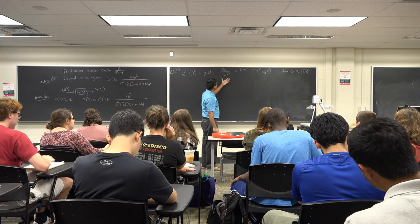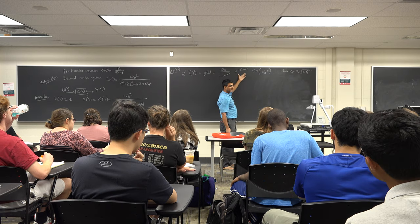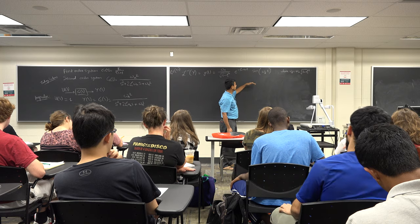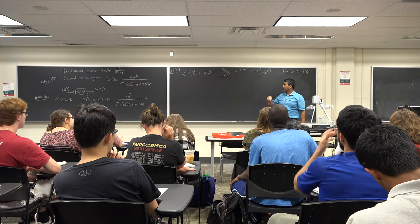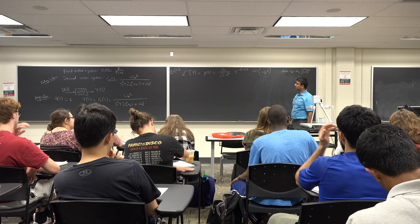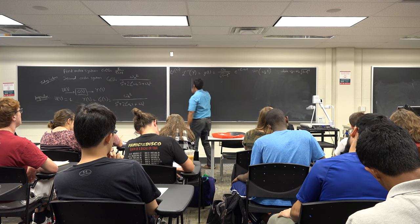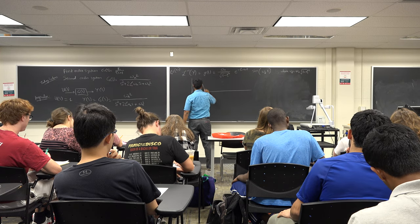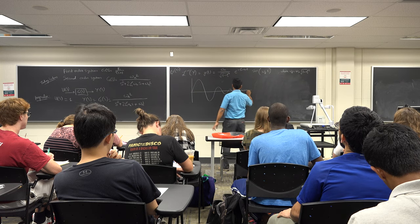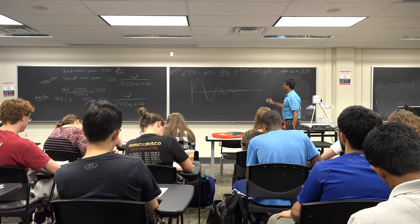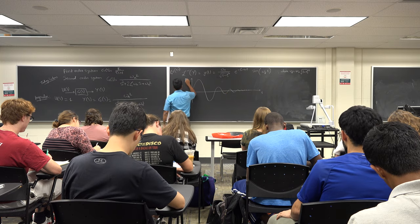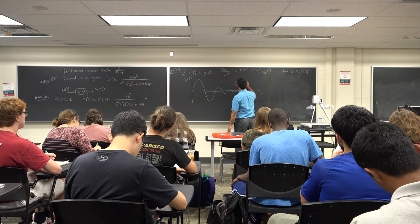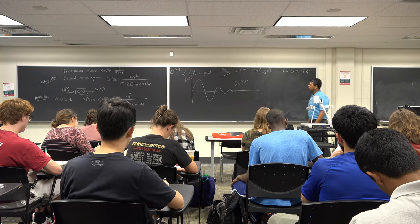What does this expression consist of? There is some amplitude, a decay term that decays exponentially with respect to time — so as time increases, this goes to 0 — and then a sinusoidal term that induces oscillations in the output. So the impulse response is going to look like a decaying sinusoid, for the case where ζ is between 0 and 1.